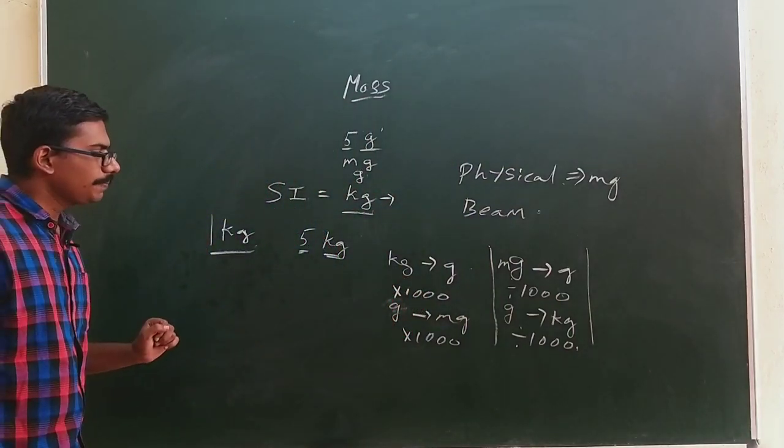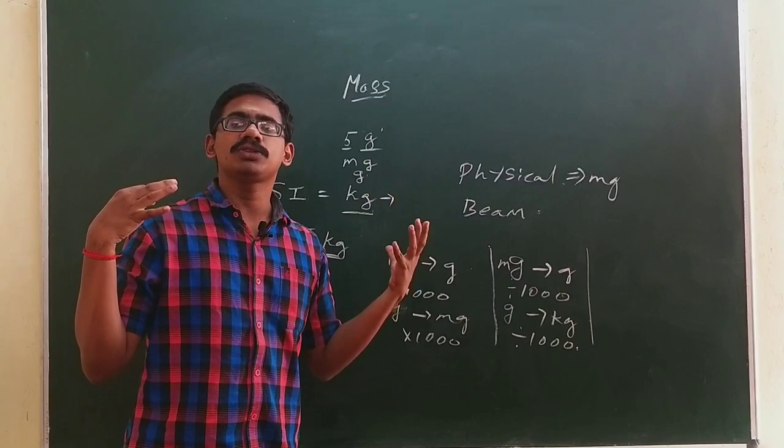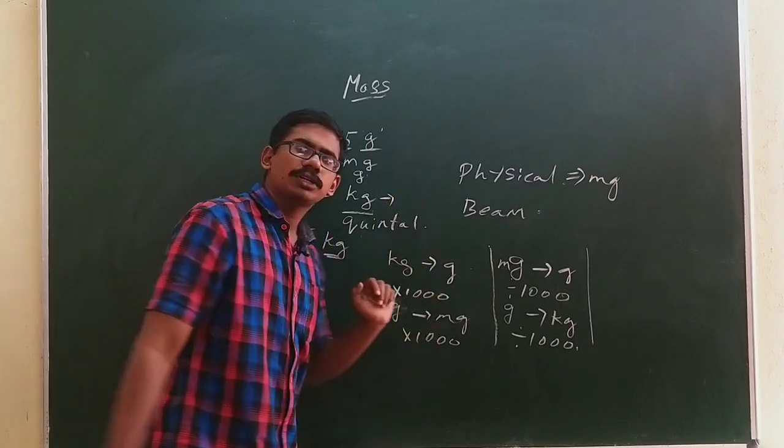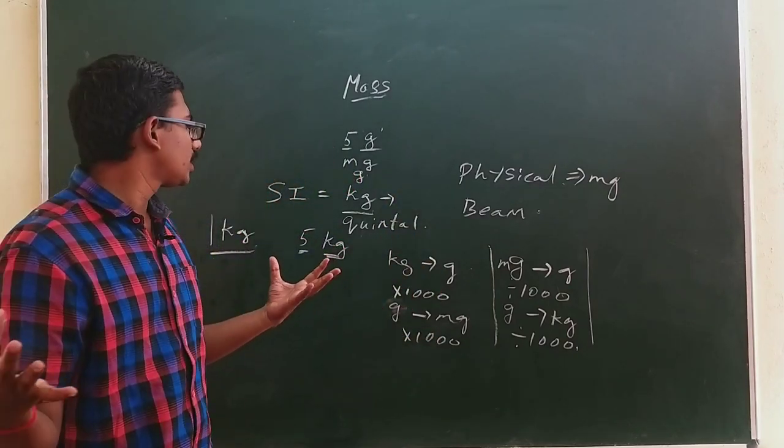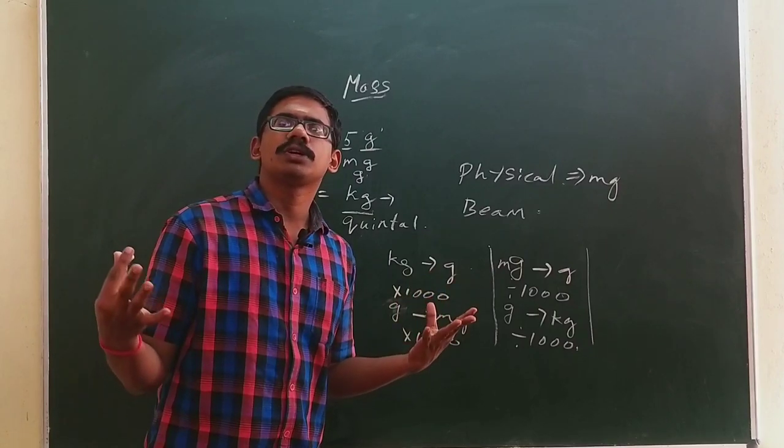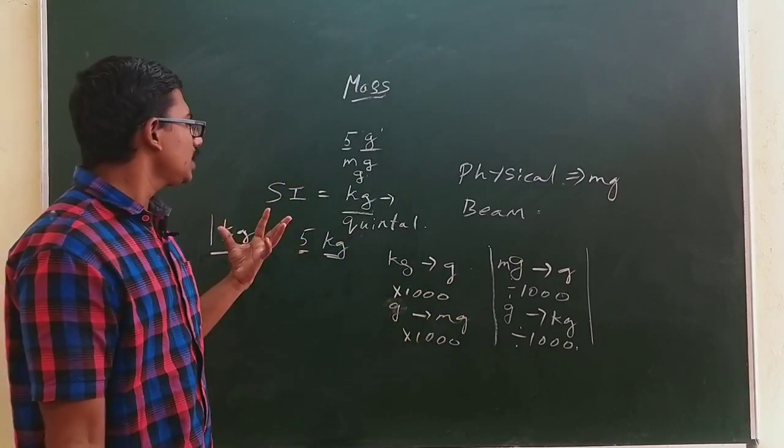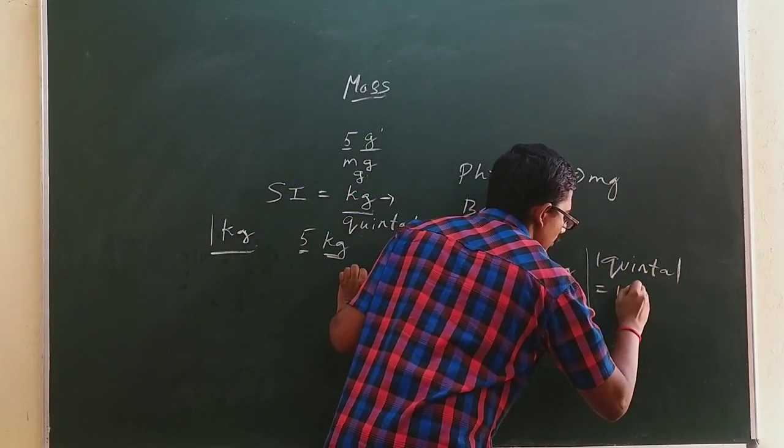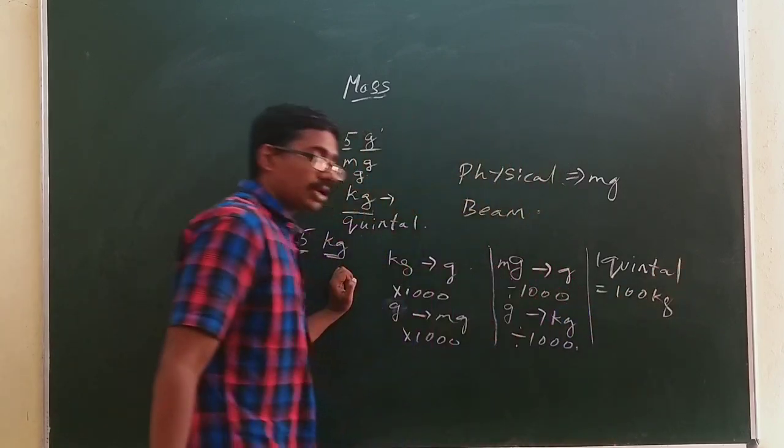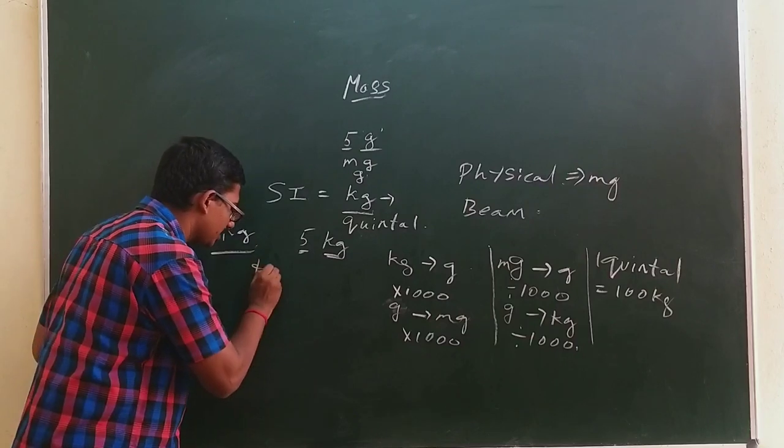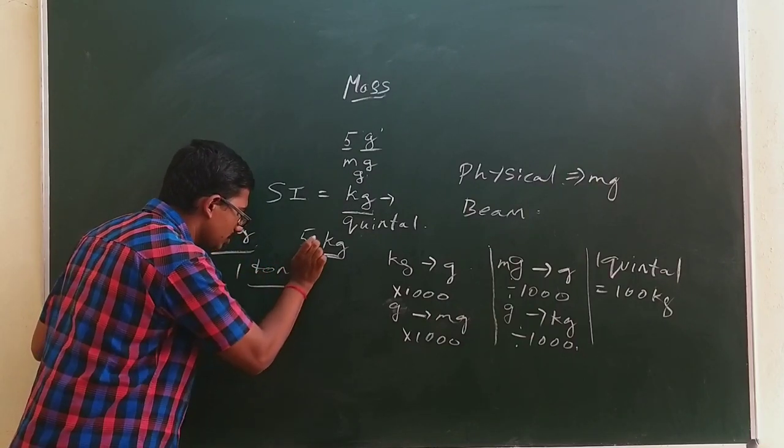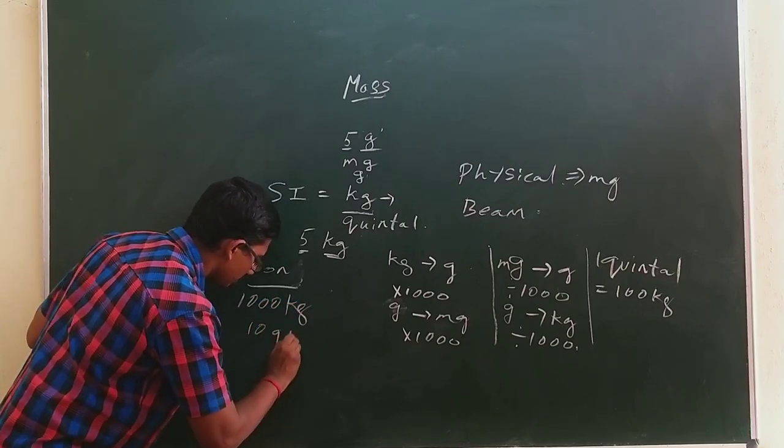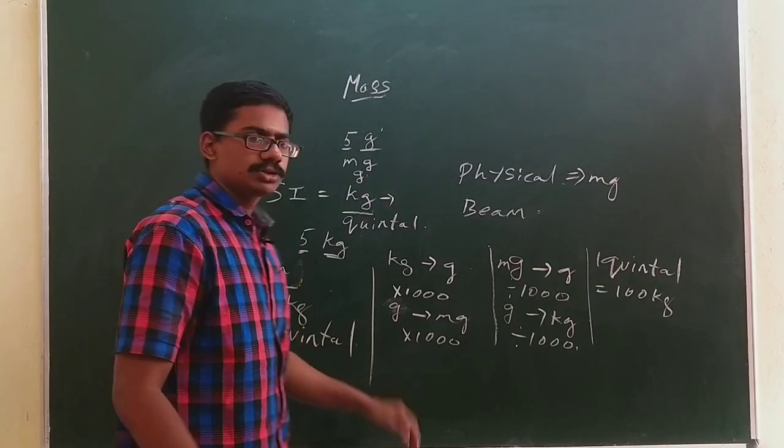If you look at larger units, we have quintals. In the news, there will be 100 quintals of onion, 1000 quintals of rice. One quintal is equal to 100 kilogram. Then you measure tons. One ton is equal to 1000 kilogram, which is obviously 10 quintals.